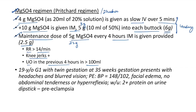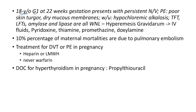Clinical case of preeclampsia: 19-year-old primigravida with twin gestation at 35 weeks presents with headaches and blurred vision. BP is 148/102, facial edema, no abdominal tenderness or hyperreflexia. Workup shows 2+ protein on urine dipstick — this is a case of preeclampsia. Another case: 18-year-old primigravida at 22 weeks with persistent nausea and vomiting. Examination shows poor skin turgor, dry mucous membranes. Workup shows hypochloremic alkalosis; thyroid, LFTs, amylase and lipase all normal — classical case of hyperemesis gravidarum.